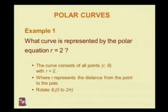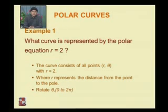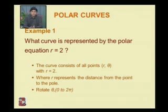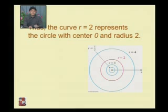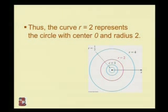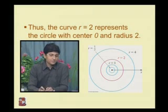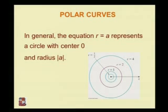First example: the curve represented by the polar equation r = 2. The curve r = 2 consists of all points (r, θ) with r = 2, where r represents the distance from the point to the pole, and theta rotates from 0 to 2π. The curve r = 2 represents a circle with center 0 and radius 2. In general, r = a represents a circle with center 0 and radius |a|.